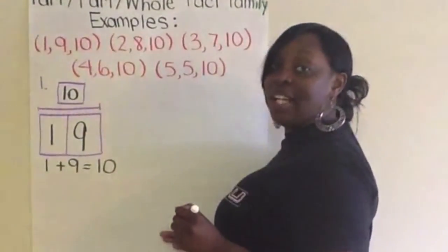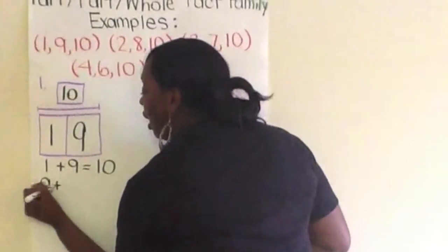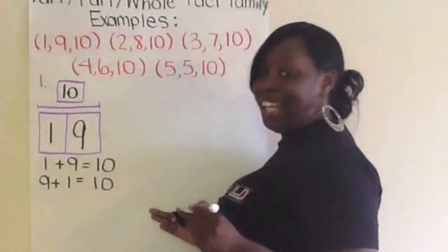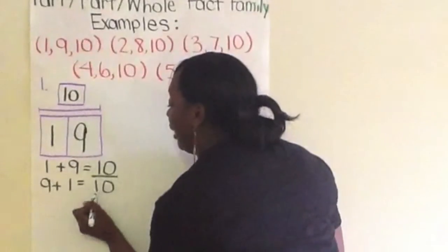The next related addition problem, we'll flip it around. 9 plus 1 equals 10. Remember, anytime you're adding and finding the sum, the whole number always comes at the end.